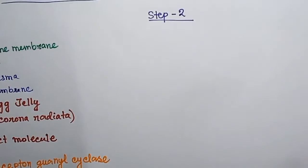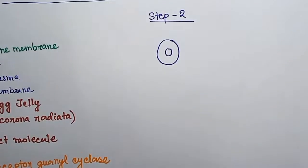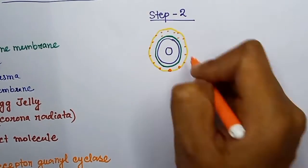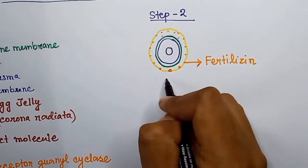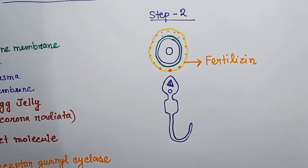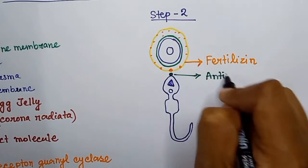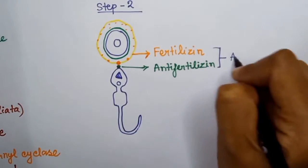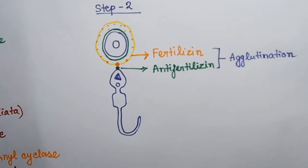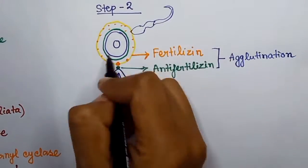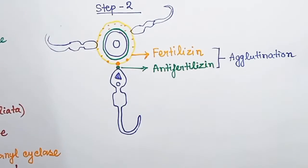Now the sperm has reached near the egg. In the next step, there comes another molecule which is present on the egg jelly. This molecule is known as fertilizin, and a different molecule called anti-fertilizin is present on the head of the sperm. So when fertilizin and anti-fertilizin come close to each other, they coagulate — they cause agglutination. That means the sperms will stick to the egg jelly layer.